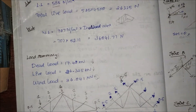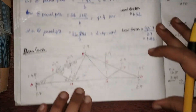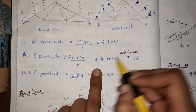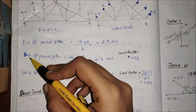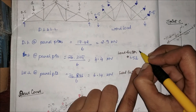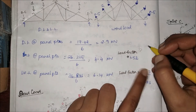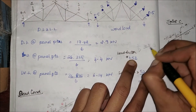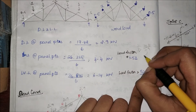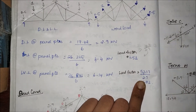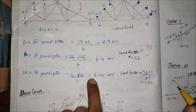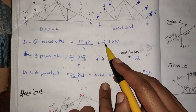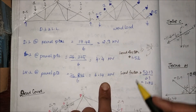How will I find the load factor? Coming to this point: the dead load panel point value is 2.9, and the live load panel point is 4.4. So the live load factor is 4.4 divided by 2.9, which gives 1.52.